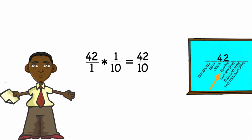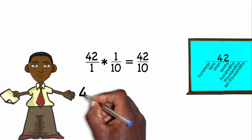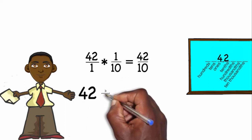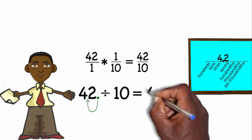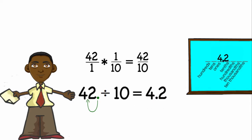I'm going to write this answer as a decimal by finishing the division problem. 42 tenths is 42 divided by 10. So 42 — the decimal point is at the end because that's the same as 42.0. The decimal point is going to move one spot to the left, and so my final solution is 4.2.